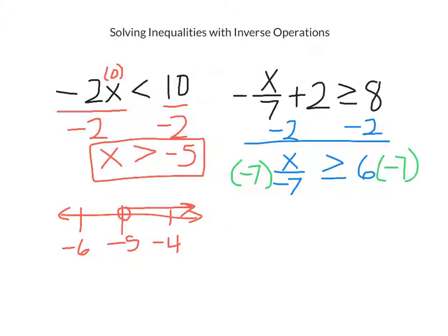And as soon as I multiply or divide by a negative, I flip the inequality sign around so I don't forget. And x is less than or equal to negative 42.